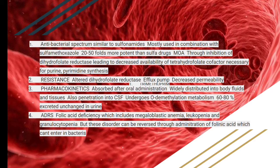Resistance is the same as for sulfonamides. Pharmacokinetics: trimethoprim is absorbed after oral administration and distributed throughout the body and tissue fluids. It also penetrates the CSF because it can cross the blood-brain barrier. Metabolism involves O-demethylation; 60 to 80 percent is excreted unchanged in the urine. ADRs include folic acid deficiency because it inhibits folic acid formation, resulting in megaloblastic anemia, leukopenia, and granulocytopenia.